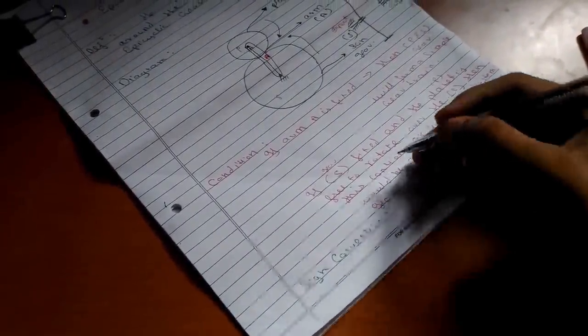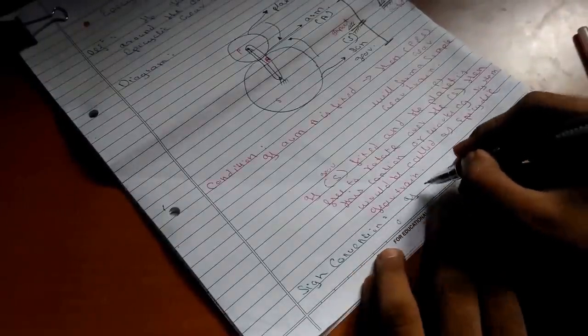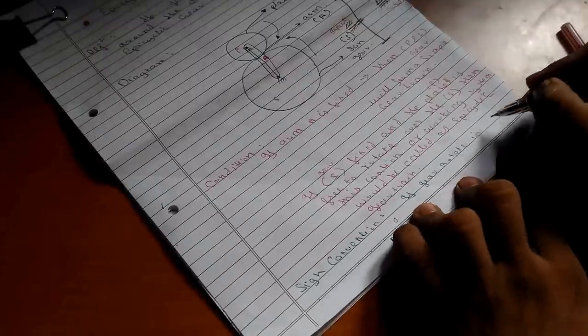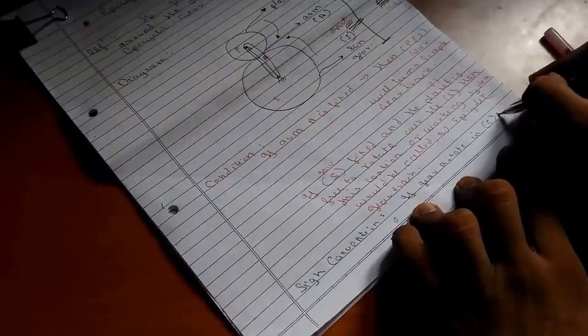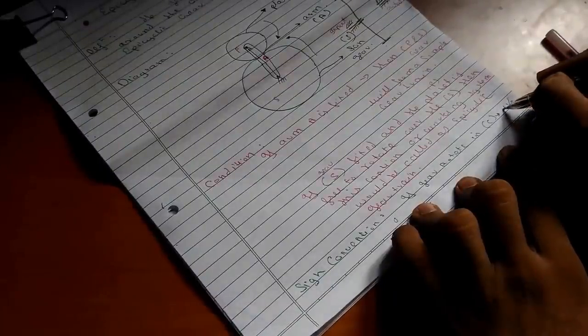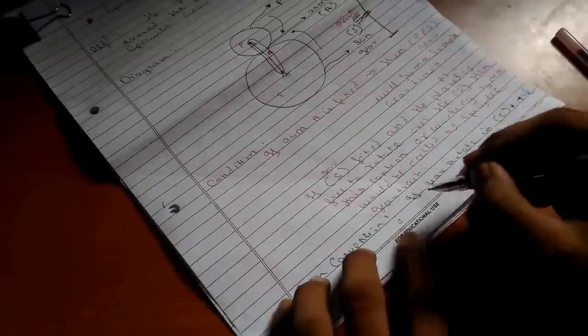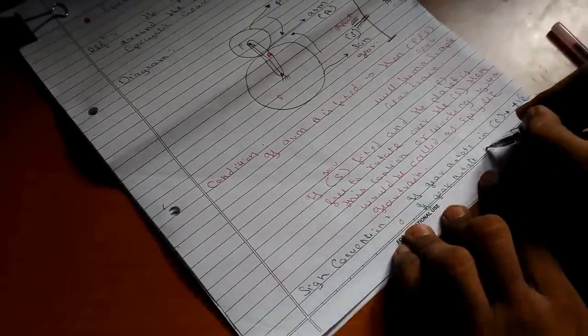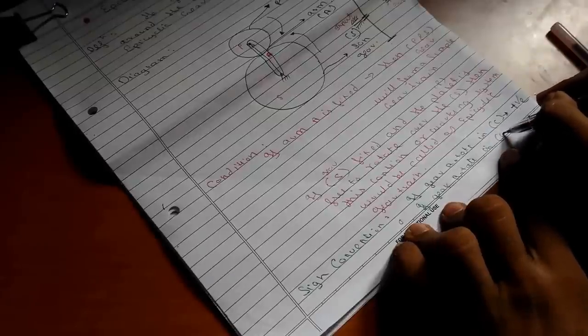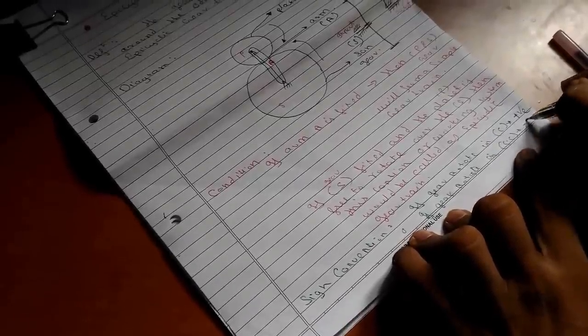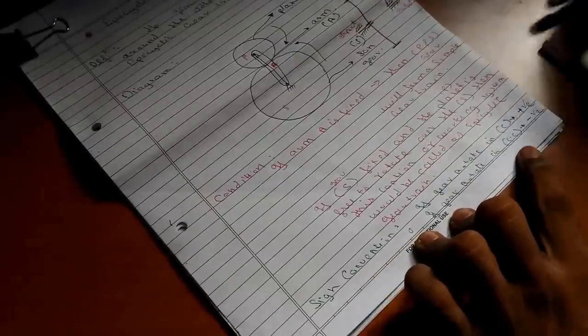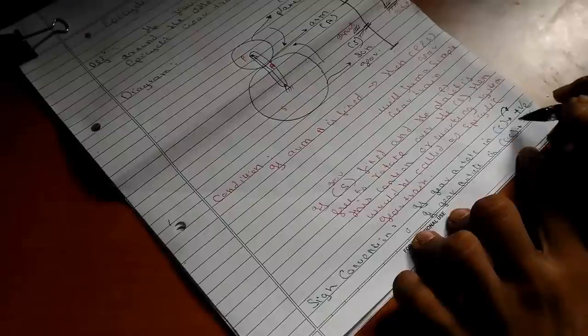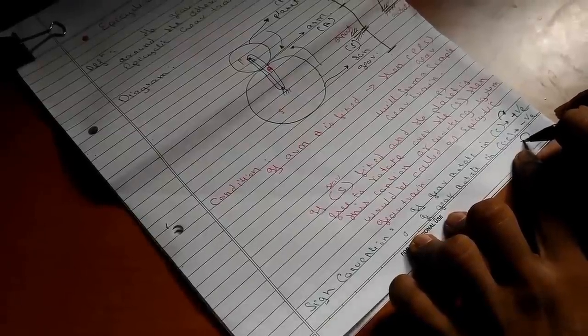Now let us see the sign convention. If gears rotate in clockwise direction, then it is usually taken as positive. And if gears rotate in counter-clockwise, then it is taken as negative. You can see that clockwise is usually referred as like this and counter-clockwise usually referred as like this.